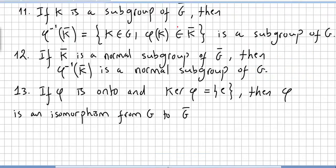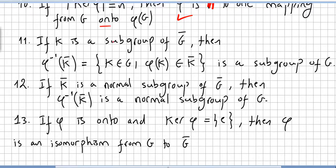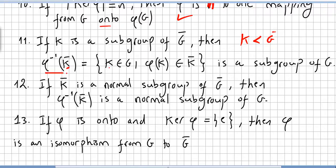If K is a subgroup of G-bar, then the inverse image of K — that is, the set of k in G such that phi of k is in K-bar — is a subgroup of G. So if K is a subgroup of G-bar, then the inverse image is a subgroup of G.